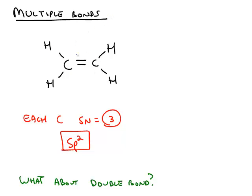For example, in this Lewis structure, we notice that each carbon has a steric number of three. There are three ligands around each carbon atom. Two of them are hydrogens, and the third is the other carbon. Steric number of three matches a hybridization of sp2.